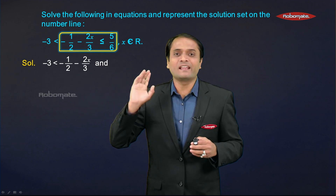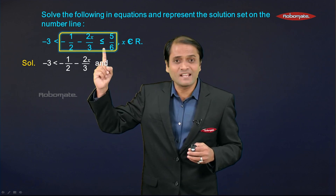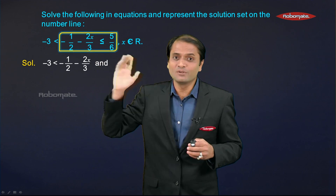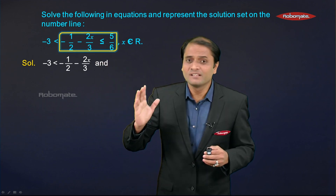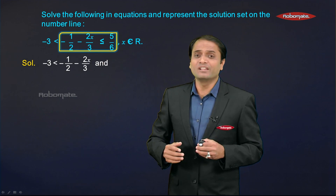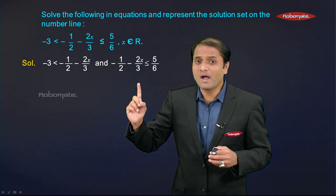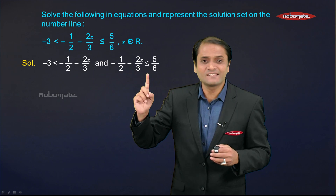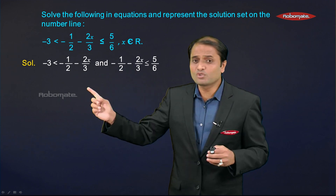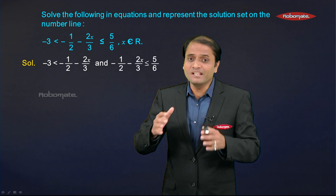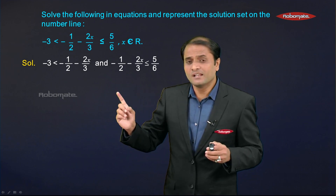Now observe the second and third expressions connected by the second inequality sign, which is less than or equal to. This gives us the second linear inequation: −1/2 − 2x/3 ≤ 5/6. We will solve each linear inequation separately.